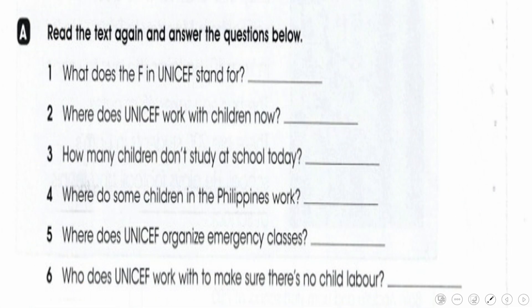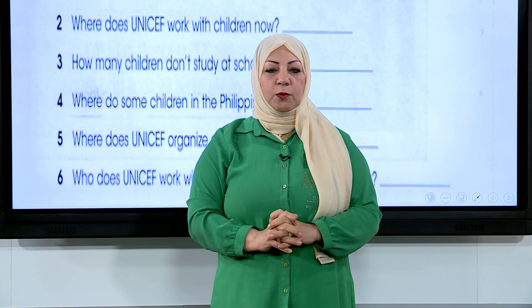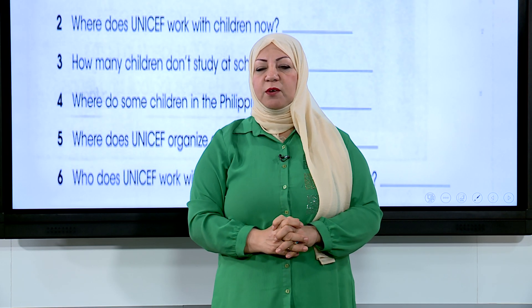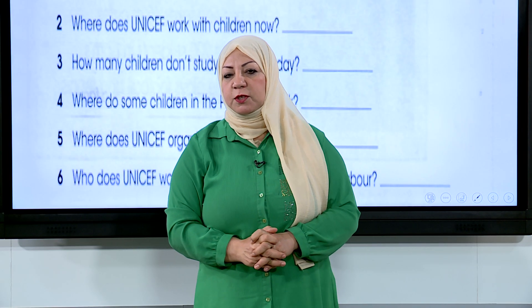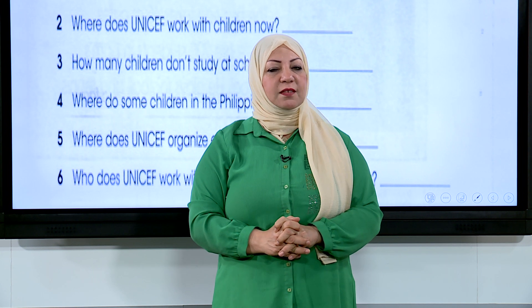In exercise A, you have to read the text again and answer the questions below. For example, question one: what does the F in UNICEF stand for? With that, we have finished part one from lesson three. Be with us for part two. Special thanks to the whole studio staff and our supervisor Mr. Mustafa Karim. Thank you and goodbye.